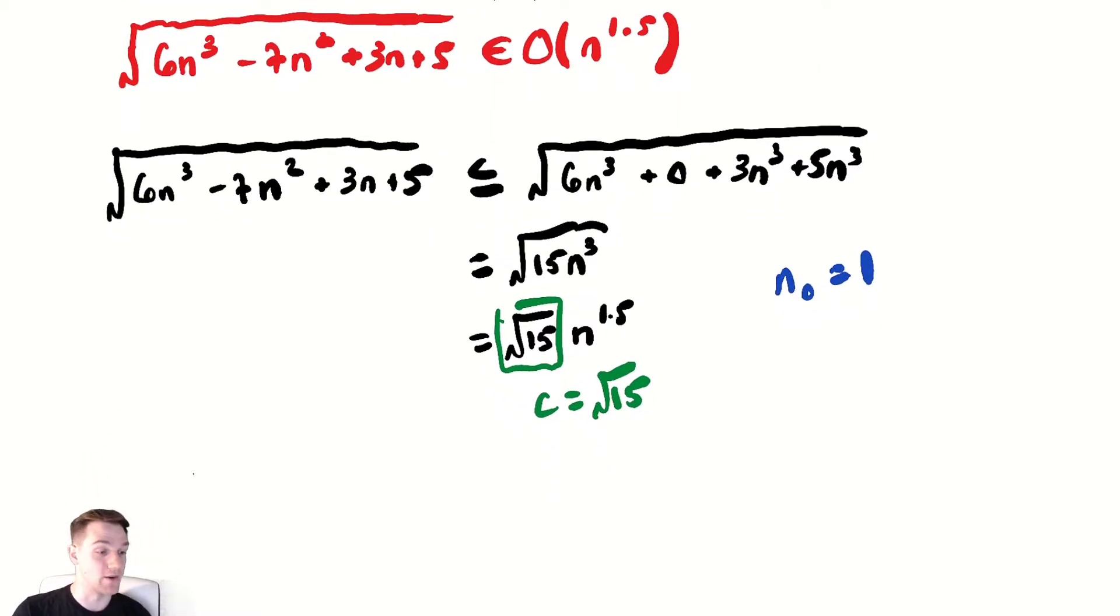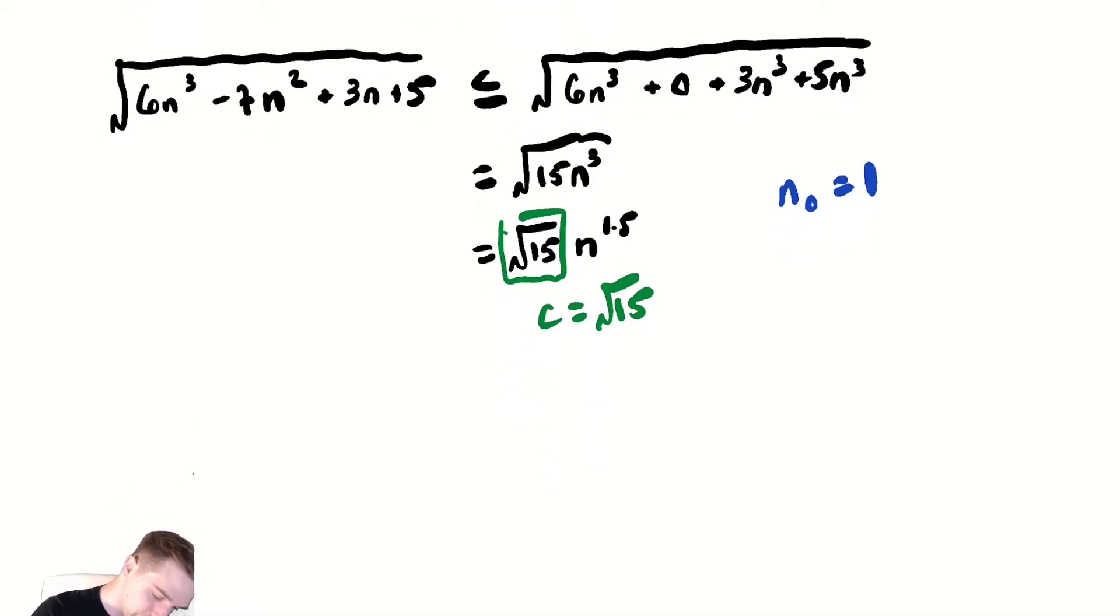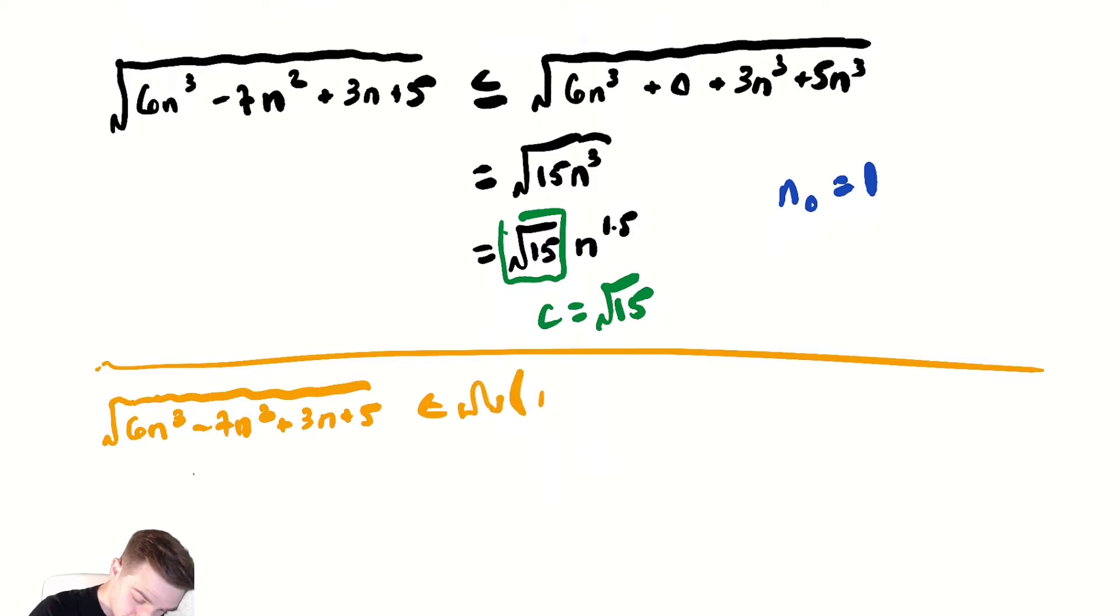Now let's proceed and show how it's in big omega. Radical 6n cubed minus 7n squared plus 3n plus 5 is in big omega of n to the 1.5. Now we want to make that smaller and make it look like n cubed. But a problem occurs.